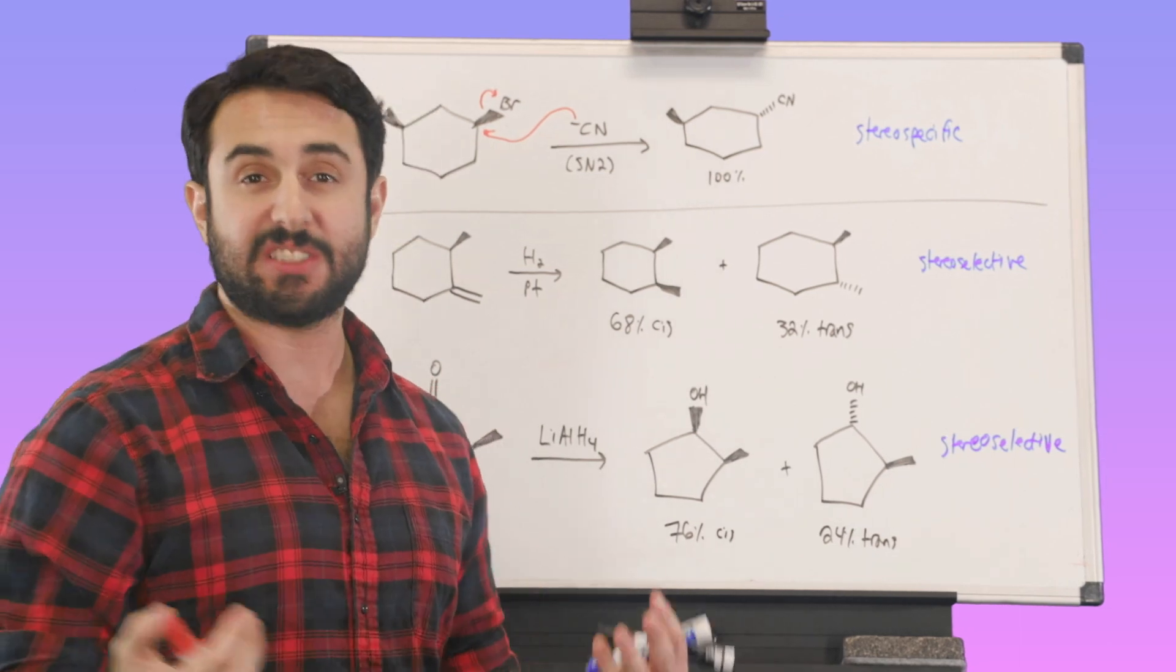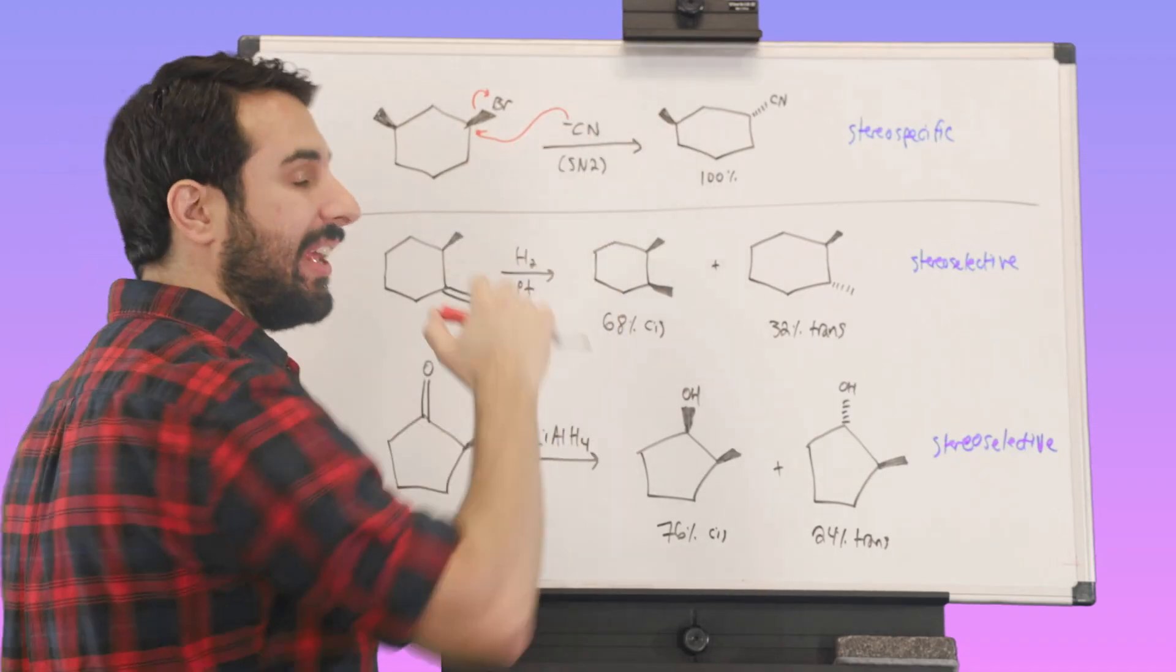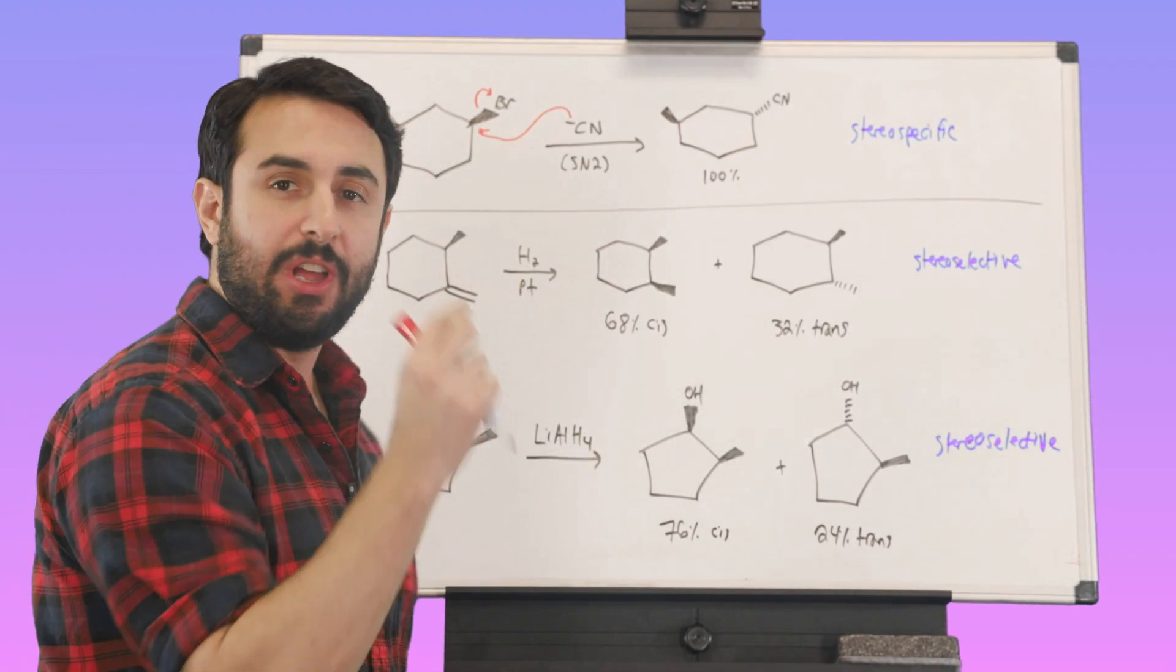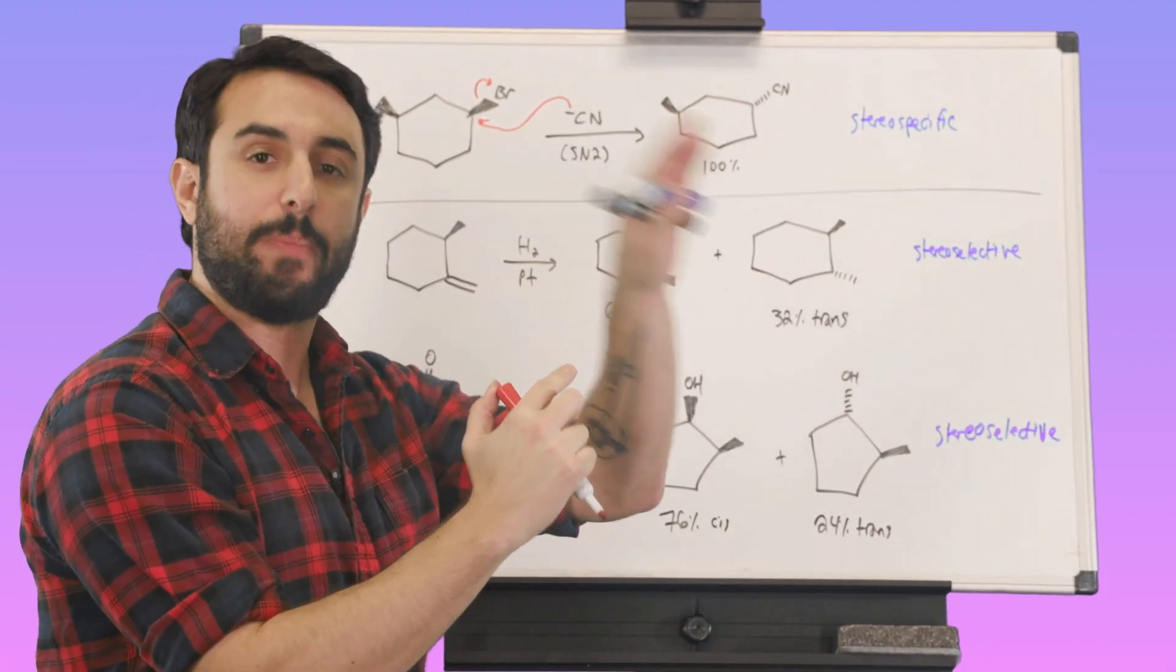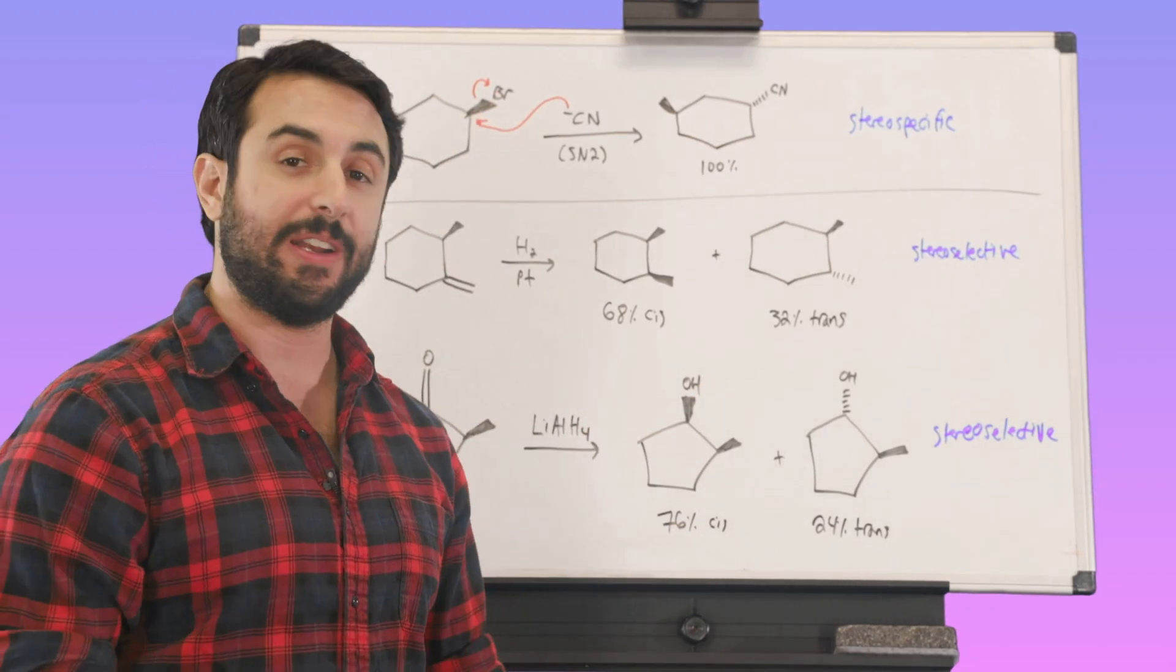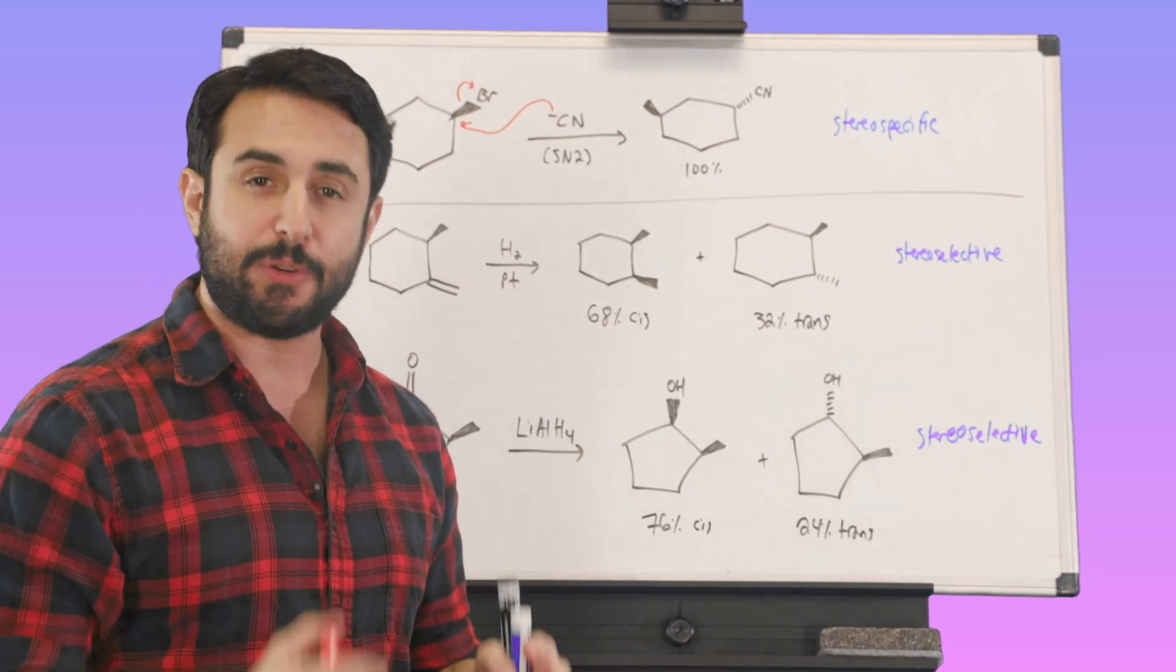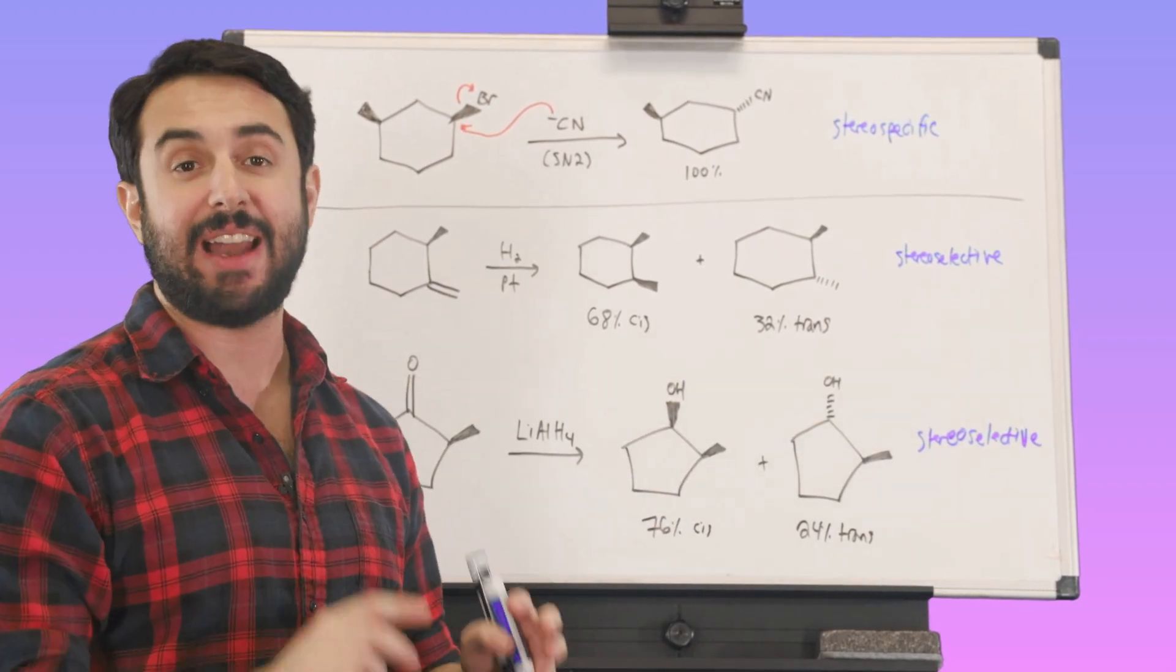The reasoning for this is because of the SN2 mechanism. We know that in order for substitution to occur, the incoming nucleophile is going to have to access the lowest unoccupied molecular orbital of the substrate. And as it happens, that is the antibonding orbital that is precisely 180 degrees from the carbon leaving group bond. So the nucleophile can only approach in one very specific direction. That's why we're only going to get one very specific stereochemical outcome.